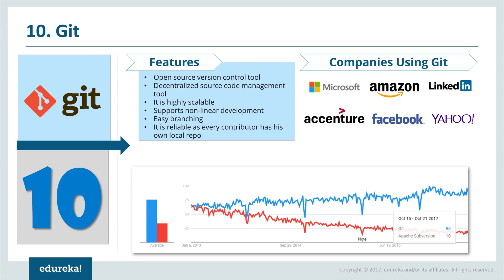We start with the version control tool Git. Git is an open source, decentralized source code management tool. It is highly scalable and supports non-linear development. It is pretty reliable as every contributor has their own local repository. Companies that use Git include Microsoft, Amazon, LinkedIn, Accenture, Facebook, and Yahoo. On Google Trends, Git is way ahead of Apache Subversion, which is a centralized version control tool.